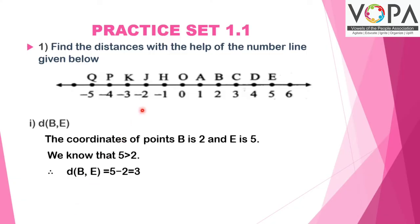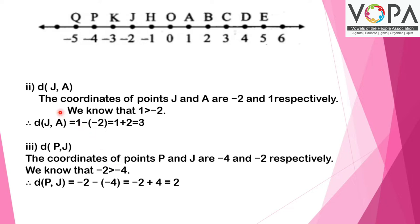Practice set 1.1: Find the distances with the help of a number line given below. Distance of B, E: The coordinates of point B is 2 and E is 5. We know that 5 is greater than 2, therefore distance of BE is equal to 5 minus 2, which is equal to 3.